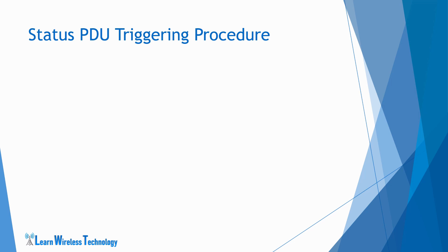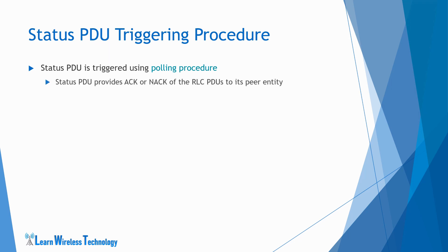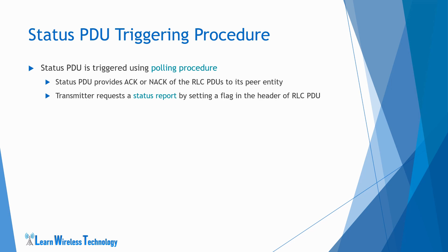The status PDU is triggered by the receiving Acknowledged Mode entity using the polling procedure. The status PDU indicates the successful reception of PDUs as well as informs about the missing PDUs to the transmitter. The Acknowledged Mode entity at the receiving side sends a status PDU to provide ACK or NAC of the RLC PDUs to its peer entity. The transmitter requests a status report from the receiver by setting a flag in the header of the last RLC data PDU transmitted within a transmission window. When a positive status report is received by the transmitter, it declares that all the PDUs are correctly received.